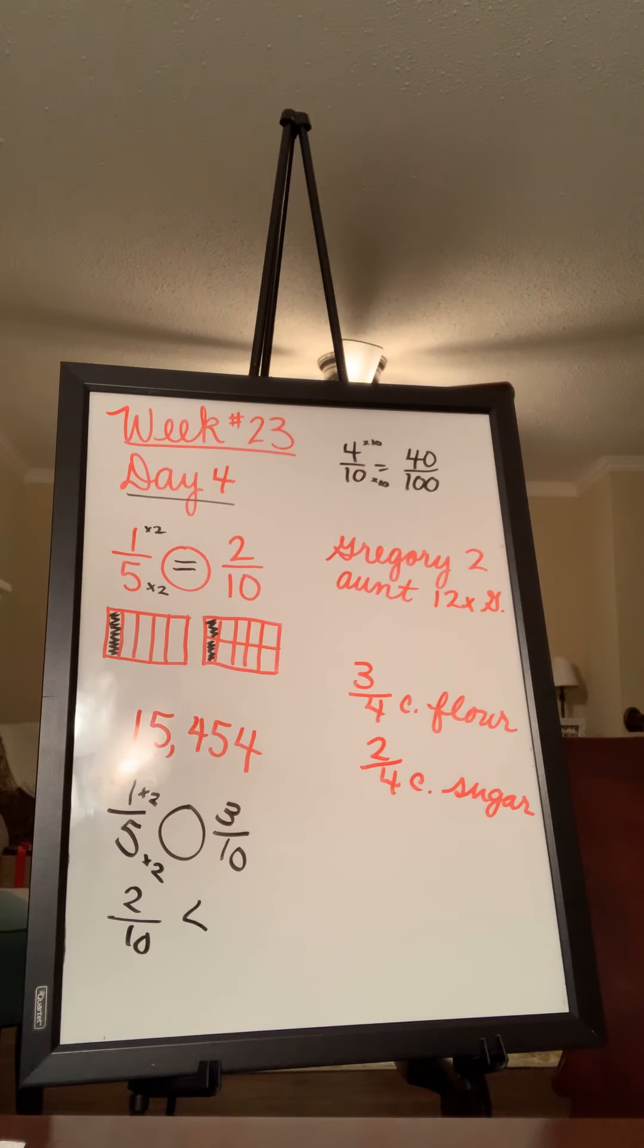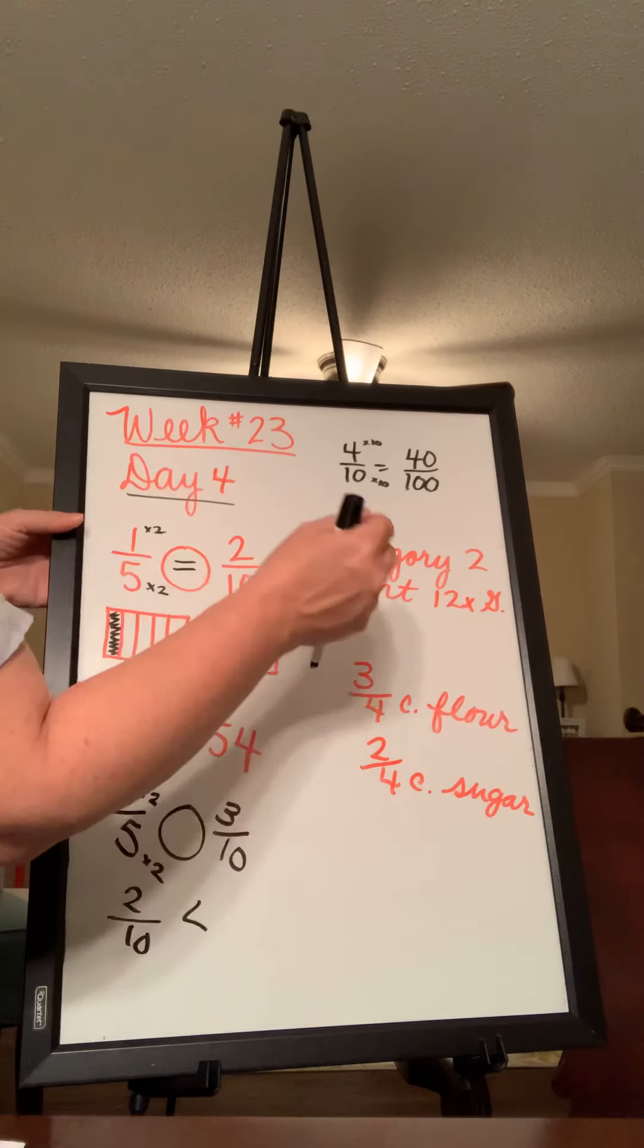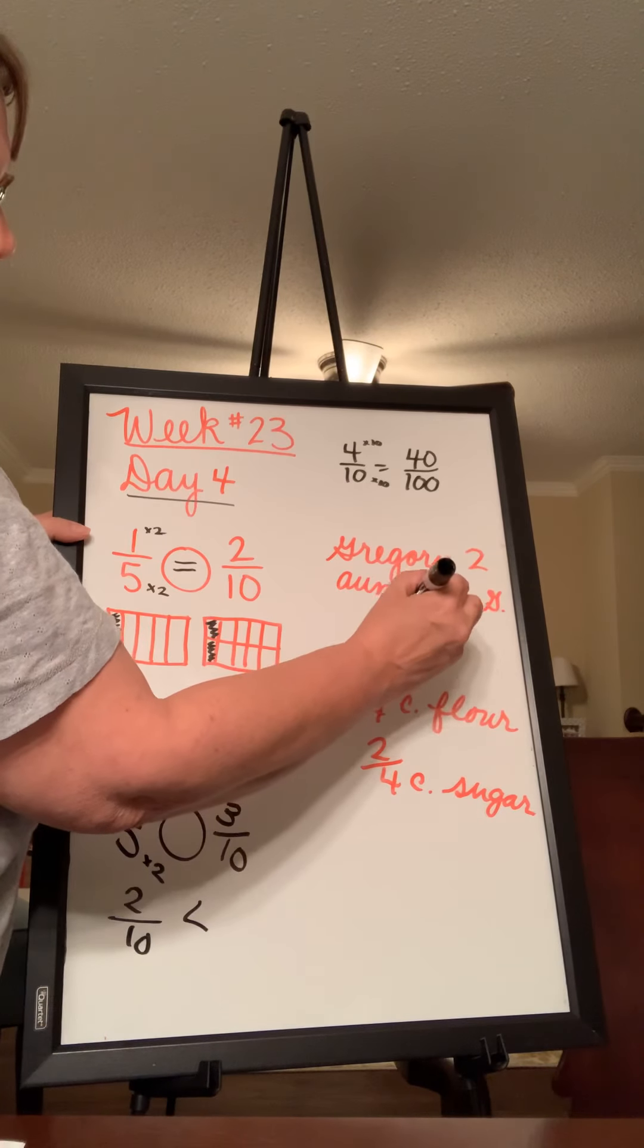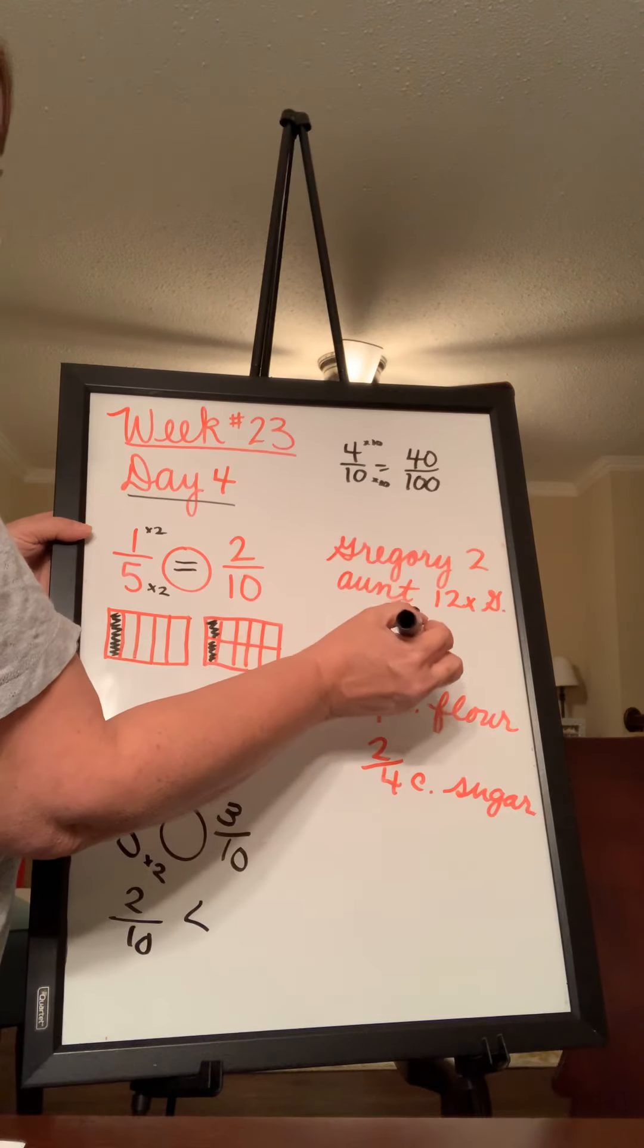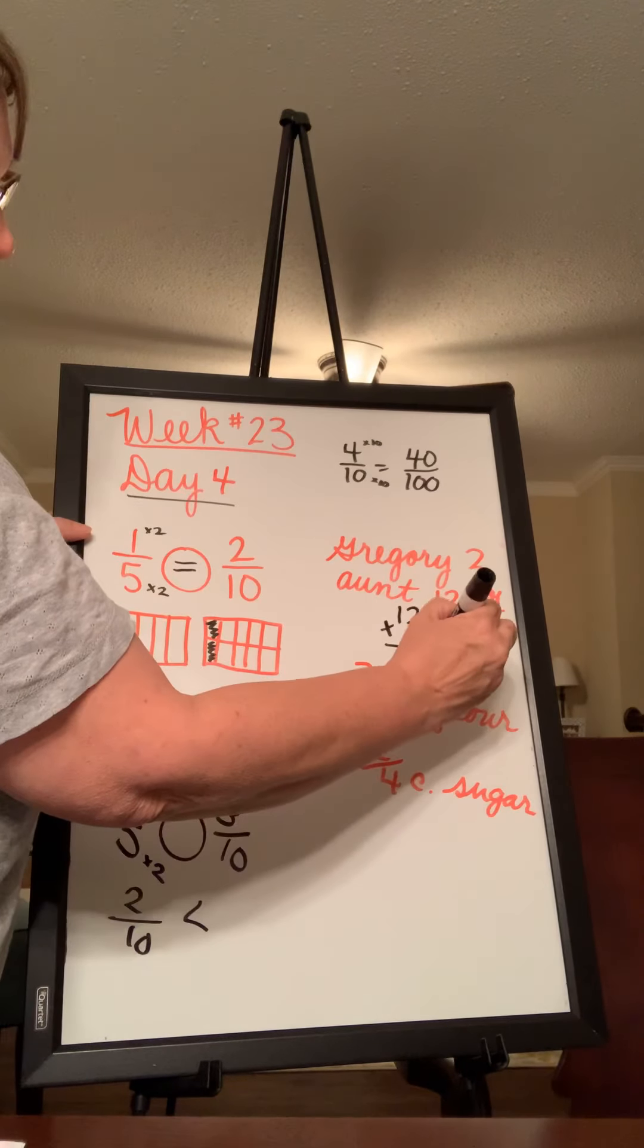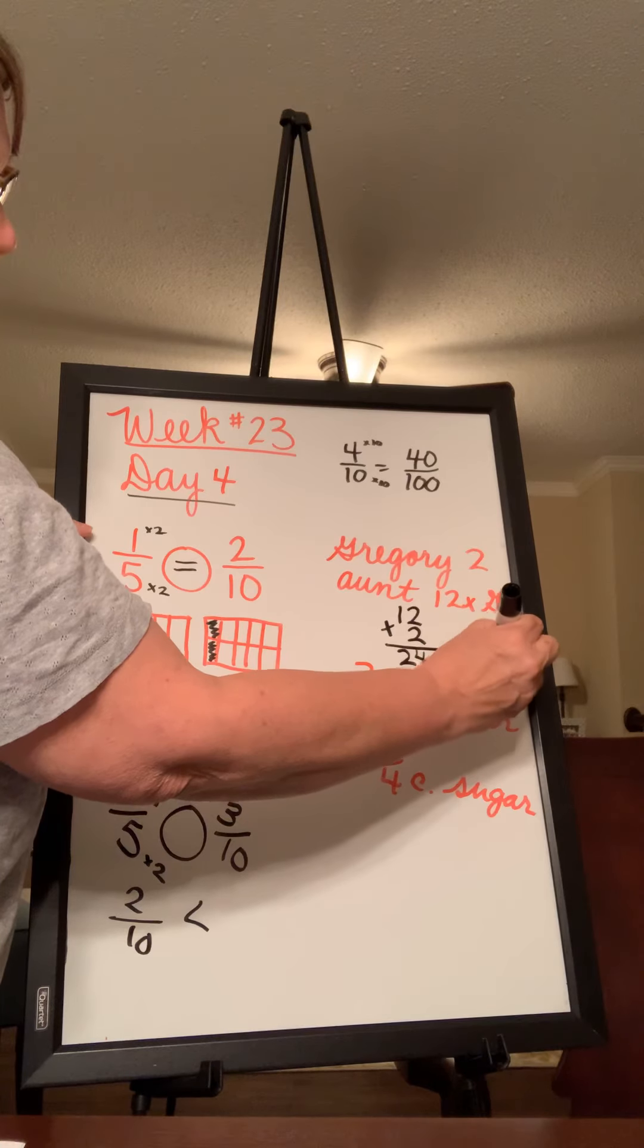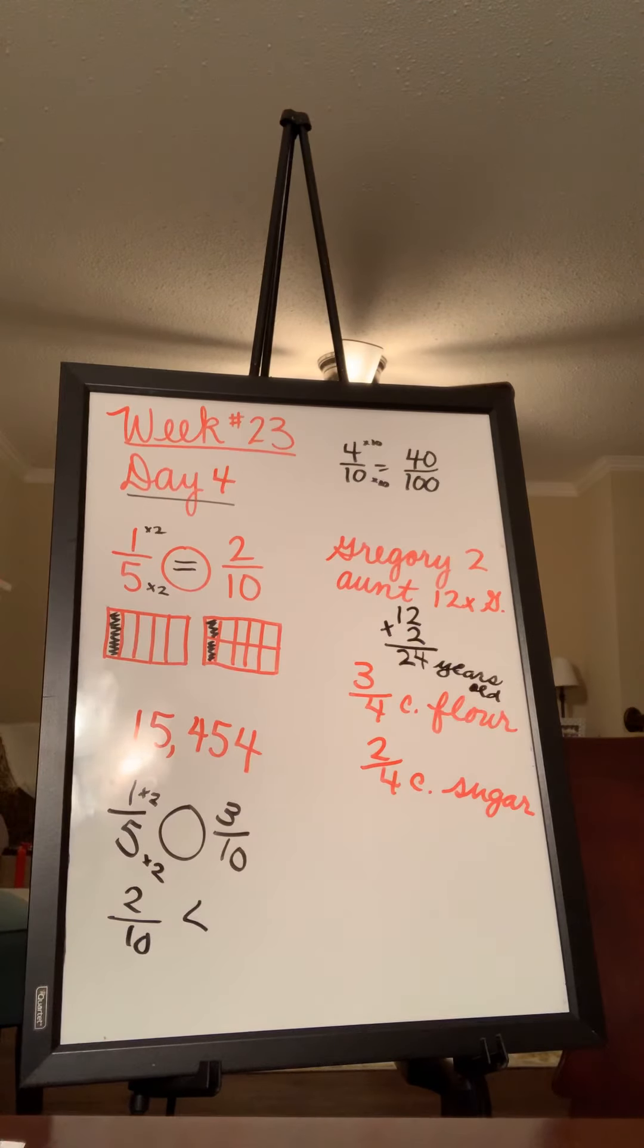Okay. In the next box, it says, write the equation. Gregory is two years old. His aunt is 12 times his age. How old is Gregory's aunt? So if Gregory is two and his aunt is 12 times older, we would multiply these two numbers. 12 times 2. And you probably already knew it, but just in case, 2 times 2 is 4, 1 times 2 is 2, and so his aunt is 24 years old. And we did write our equation 12 times 2. So you need to be sure your equation is on there.